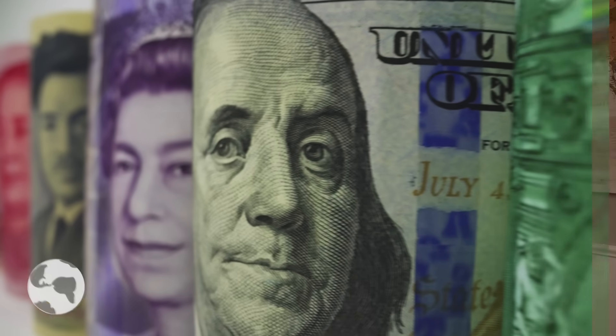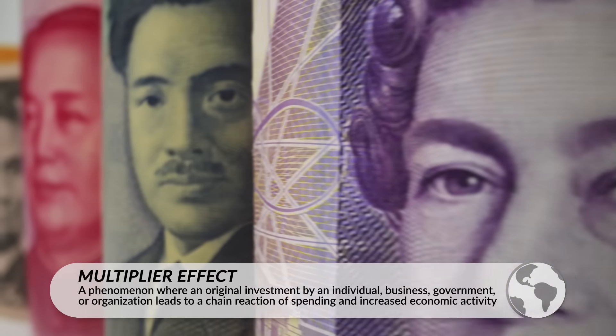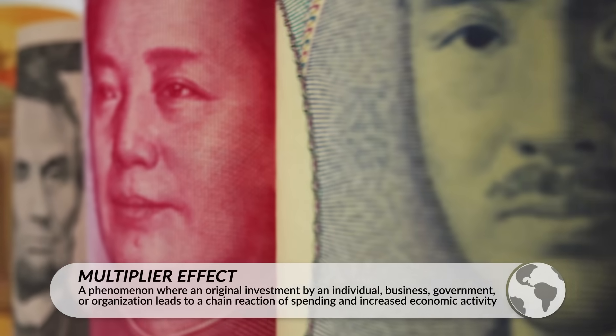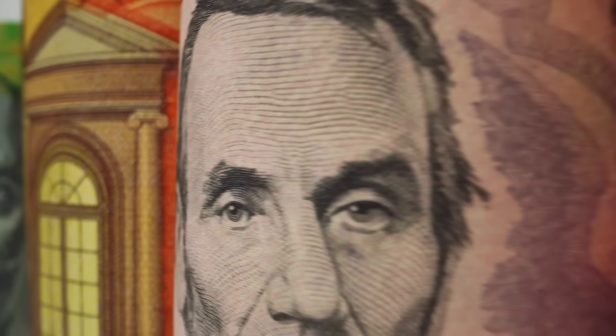Before we delve deeper into the production of different products, I want to talk about the multiplier effect. The multiplier effect looks at how an original investment into an economy can create a ripple effect and end up creating a larger impact than the original amount spent. Essentially, when a person, organization, or government spends money, it creates a chain reaction of additional spending.